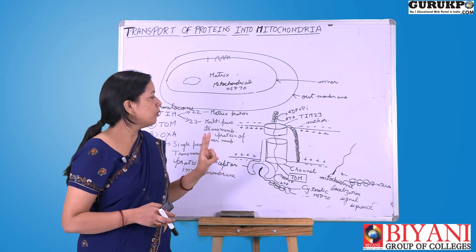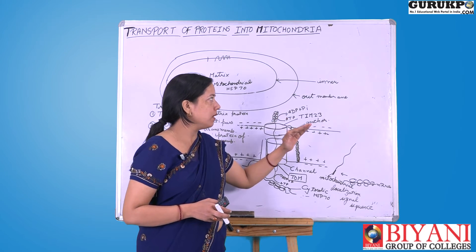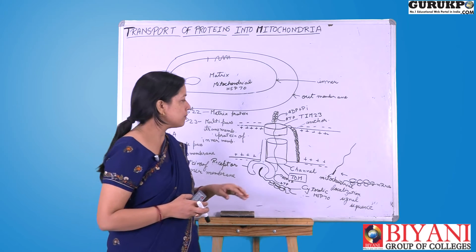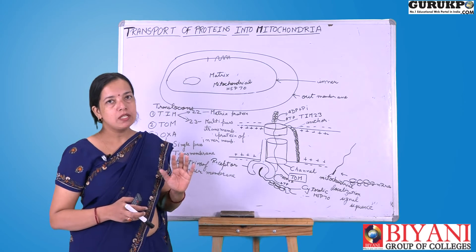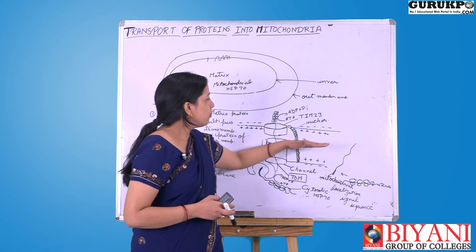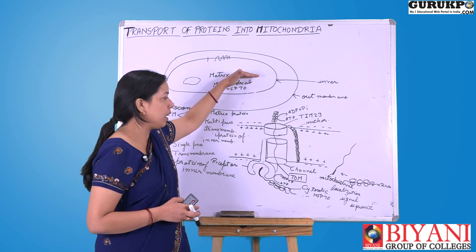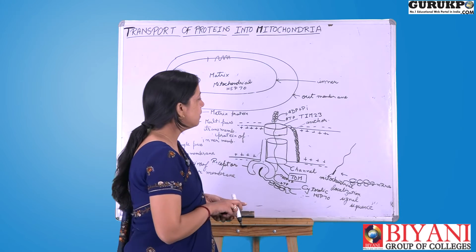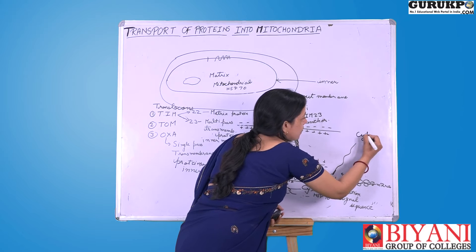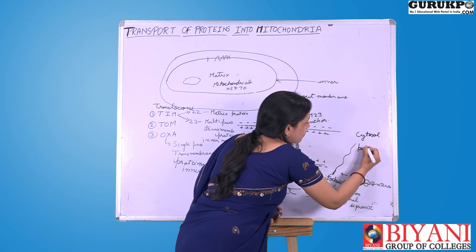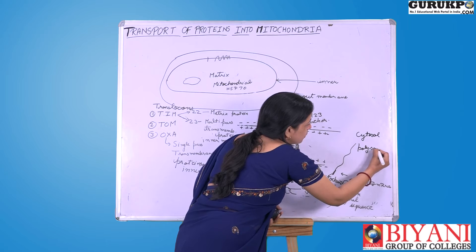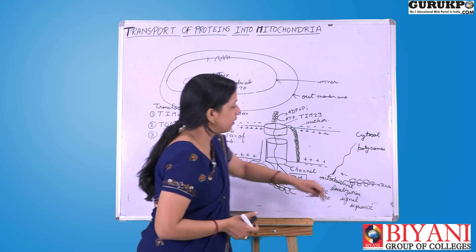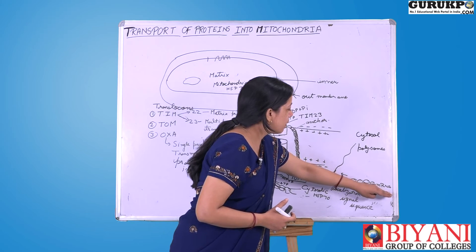Proteins synthesized by the nuclear genome are made in two ways. Some proteins synthesized on the rough endoplasmic reticulum are for secretion. But proteins to be transported to the mitochondria are not synthesized on the rough ER — they are synthesized in the cytosol by polysomes. Polysomes are many ribosomes present together, translating mRNA into mitochondrial protein.